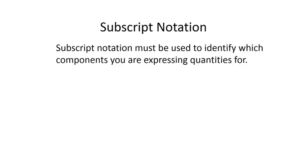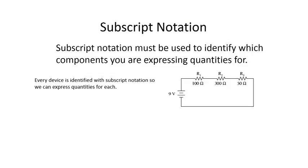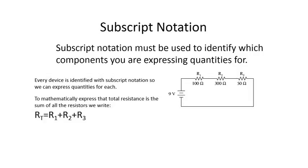I want to take a minute to discuss subscript notation. If you want to be fully literate in the language of electricity you must understand how to use subscript notation when expressing yourself. For example, we have three resistances in this circuit plus a total resistance. We can identify each one just by using subscript notation. If we wanted to write that the total resistance is the sum of all three resistors, we could express that as RT equals R1 plus R2 plus R3. The T, 1, 2, and 3 are all subscript next to the Rs, so we know which resistor we're speaking of each time.